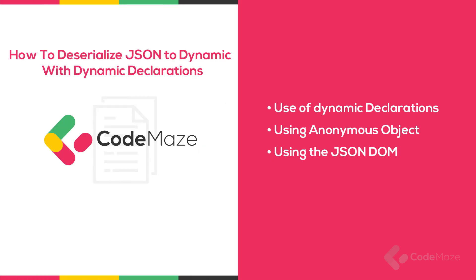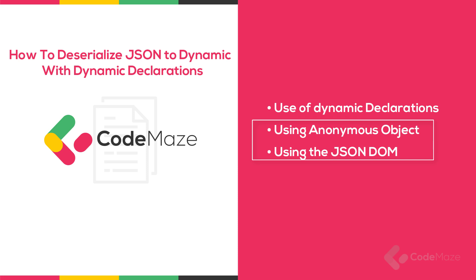In this video we are going to continue our learning about deserializing JSON to dynamic in C#. As mentioned in the previous video, we have three ways of doing that: by using dynamic declarations, using anonymous types, and leveraging the power of JSON DOM. In the previous video we covered the first option, so it's time to cover the other two. Let's start with the anonymous object approach using Newtonsoft.